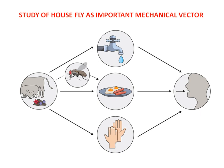As a mechanical vector, it will not allow the disease-causing agent to undergo further development. The transmission is only through the body surface, from one place to another place, so that individuals are naturally affected.